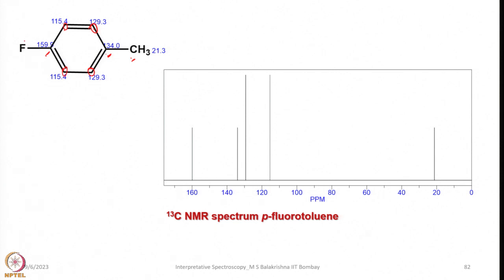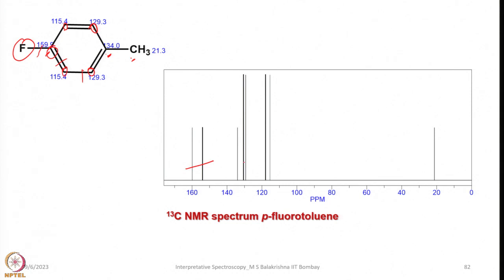Fluorine couples strongly with the directly attached carbon and the adjacent carbon, and weakly with the next carbons further away. The carbon with the largest coupling is due to the 1-bond C–F coupling, these two show longer-range coupling, these two couple weakly, and this one shows no coupling because it is beyond 3-bond range. This demonstrates how coupling helps assign signal positions in a given spectrum.